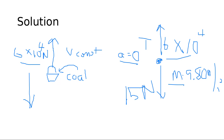Molly asks where the 9.8 comes from. That's G — the acceleration due to gravity, 9.8 meters per second squared. We've discussed this in videos. In the low-stakes assessment, you'll need to convert that to feet, which is 32 feet per second squared.